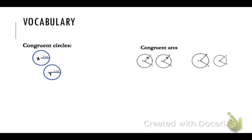Now a couple of other vocabulary terms you're going to need about arcs are congruent circles. Congruent circles are circles that have the same radius. So in this example I have two circles with a radius of three, circle X and circle Y, and they are congruent circles.